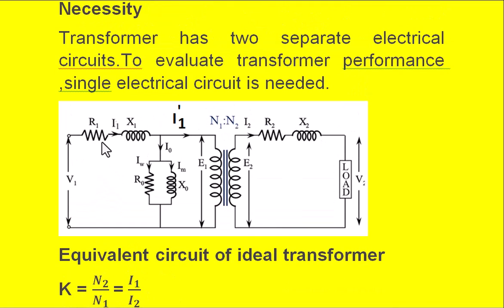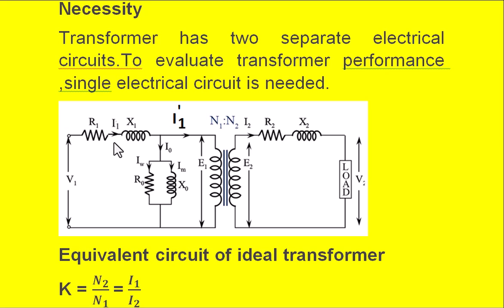Here, this is the primary electrical circuit and this is the secondary electrical circuit. The vertical lines indicate the magnetic core. V1 is the applied voltage, also mentioned as Vp. R1 is the primary winding resistance, sometimes represented as Rp. I1 is the input current to the primary winding under load conditions, and X1 is the primary winding leakage reactance, sometimes written as X subscript P.